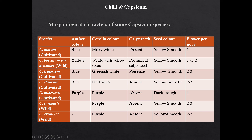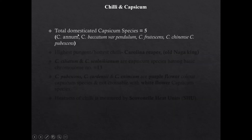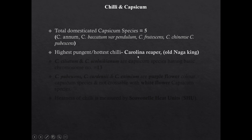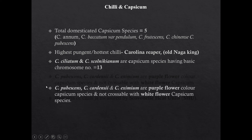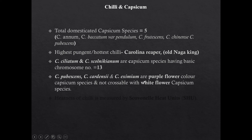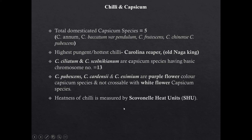You can remember these three species having purple flower color: Capsicum pubescens, Capsicum cardamomum — remember 'car' for cardamomum — and Capsicum eximium — remember 'exam' for eximium. Total domesticated species of chili are five. The hottest chili in the world is Carolina Reaper; previously it was naga king chili. Capsicum lanceolatum and Capsicum schottianum are Capsicum species having basic chromosome number 13. Pungency of chili is measured by Scoville Heat Units (SHU).